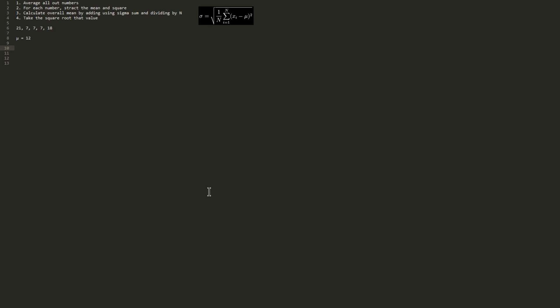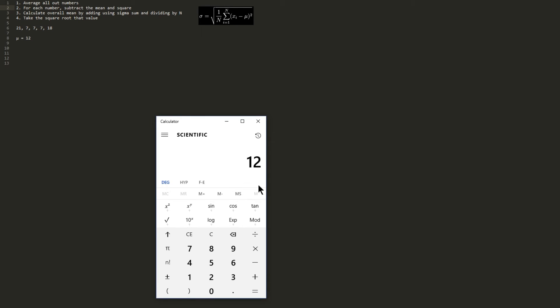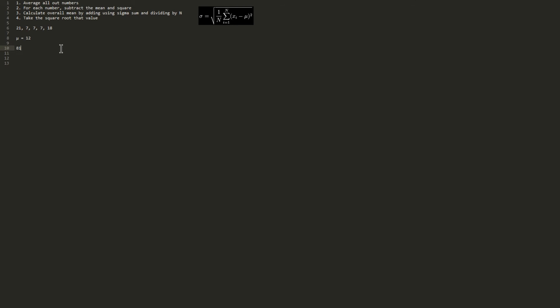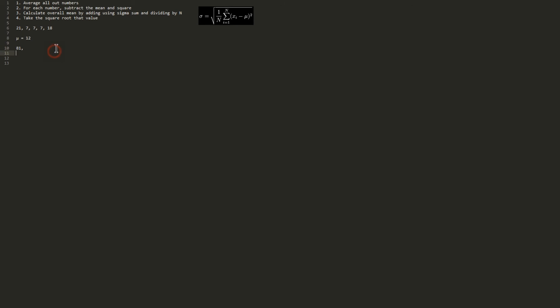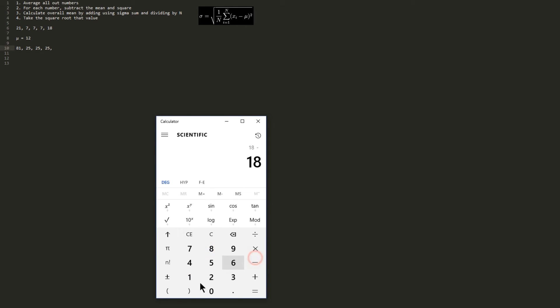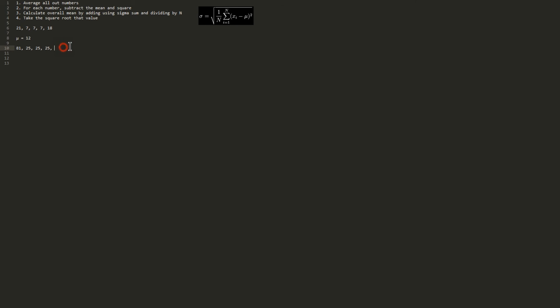Next step, for each number, subtract the mean and square. So we've got 21 subtract 12. This is 9 times 9. We're squaring, 81. We're going to create our new number set. 7 minus 12, negative 5 times negative 5, that's going to be 25. We've got three of these. 18 minus 12, 6 squared is 36. And that is our new number set.